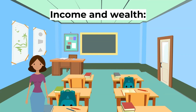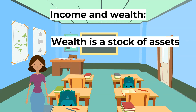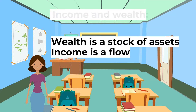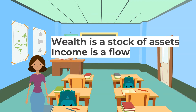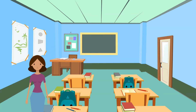Now let's look at income and wealth. Wealth is a stock of assets whilst income is a flow. Wealth is the things people own — for example, houses and possessions — whilst income is the money they receive, for example money from work and interest from savings. Countries with high levels of wealth tend to have high levels of income and vice versa, but there is not a perfect correlation between wealth and income.